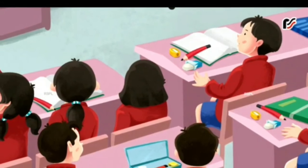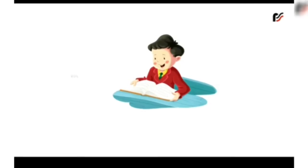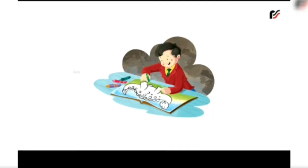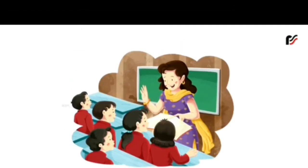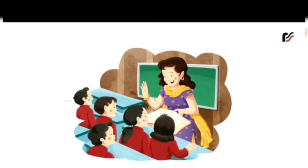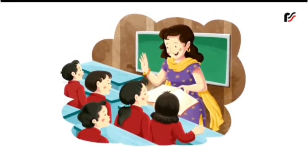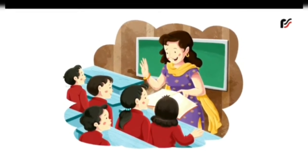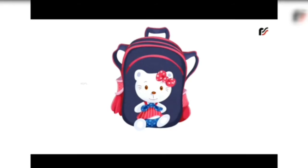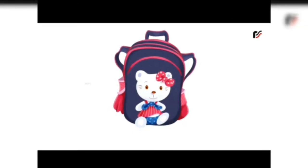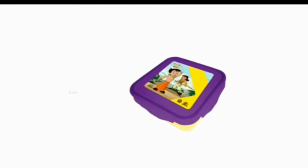I do many activities in my class - main bohot si activities karti hoon class mein. I study - main study karti hoon. I color - main coloring bhi karti hoon. I eat lunch with my friends - main apne friends ke saath lunch bhi karti hoon. I listen to the teacher and I don't make noise in my class - main apne teacher ki har baat sunti hoon.